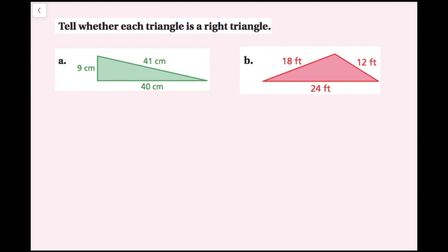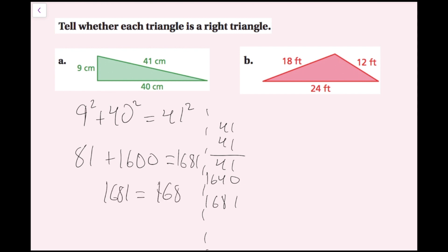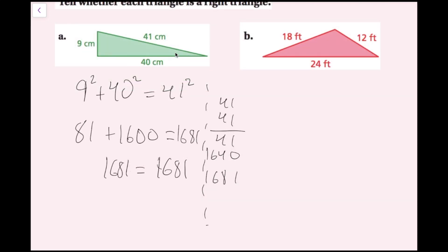I'm going to do 9 squared plus 40 squared and see if that equals 41 squared. So 9 squared is 81, plus 40 squared is 1600. That should equal 41 squared. If you don't know that off the top of your head you can work it out: 41 times 41 equals 1681. So 1600 plus 81 equals 1681, which equals 1681. Because both values are equal, I know this is a right triangle.